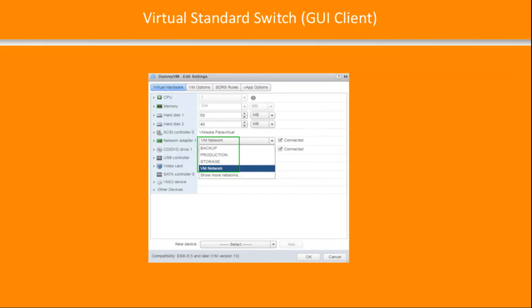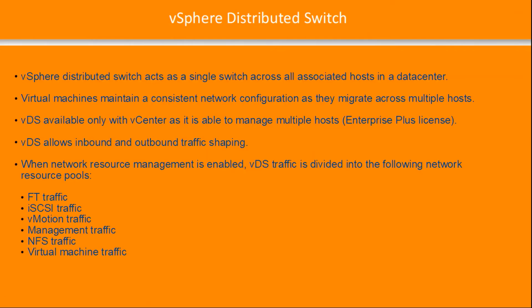This shows a GUI client screenshot displaying all the networks visible to the network adapter on the virtual machine. As this screen shows, we have VM network, backup, production, storage, and so on. When a VM administrator is configuring the network, they will simply select the dropdown list and choose the correct network for that particular vNIC.